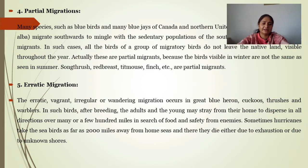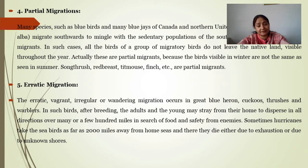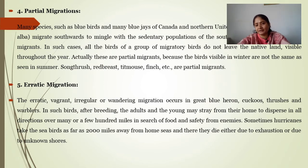Erratic, irregular, and wandering migration occur in great grey owls, cuckoos, thrushes, and warblers. After breeding, adults and young may stray from their home and disperse in all directions. This migration is indefinite — for safety, food, or protection — and we cannot predict where they will go. Sometimes hurricanes take sea birds as far as 2,000 miles away from their home sea and they either die due to exhaustion or on unknown shores.